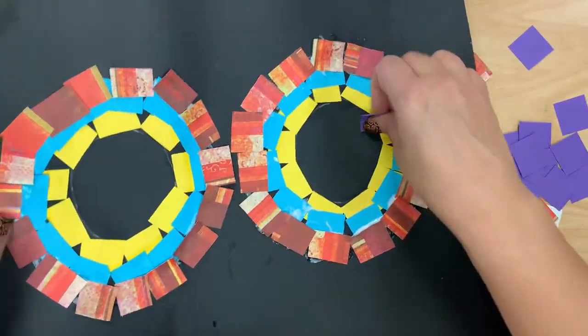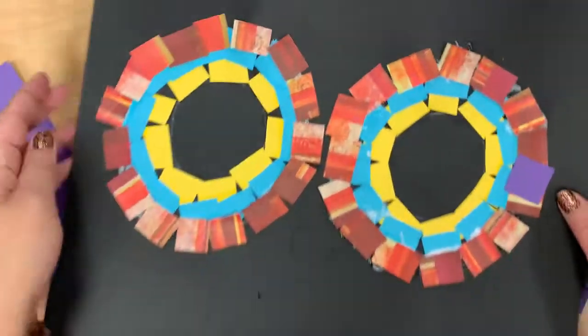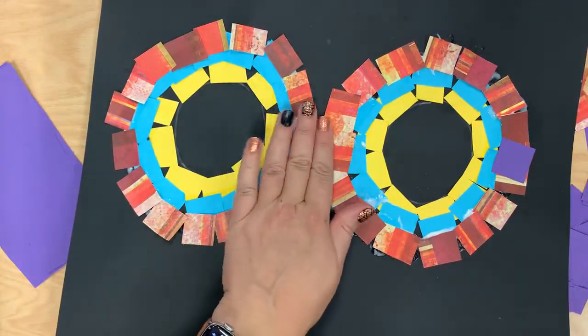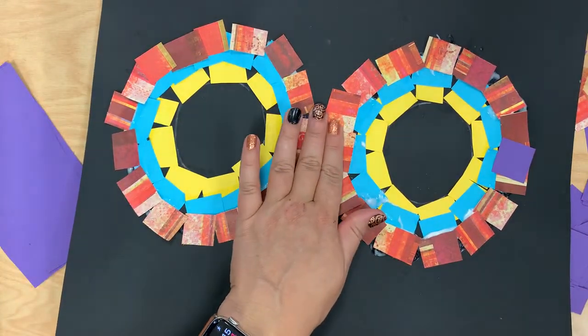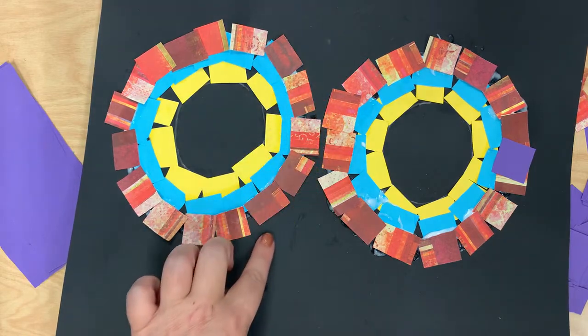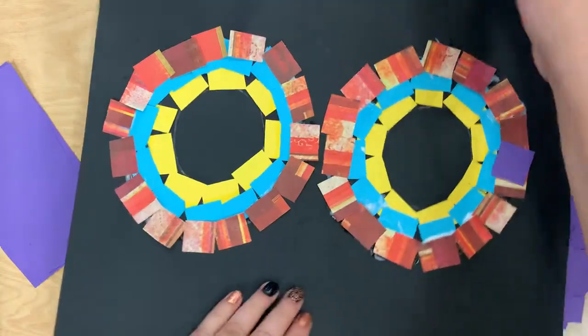And then I got one more row. Now, some of you might get to the point where your rows are touching in the middle. If that happens, don't feel like you need to put the next row down the middle. You can just go around the outside like this.